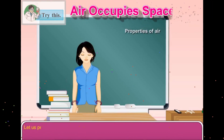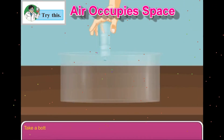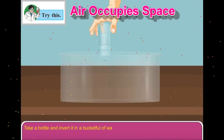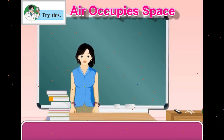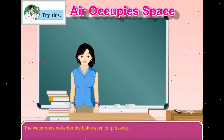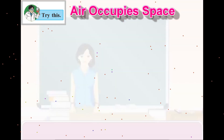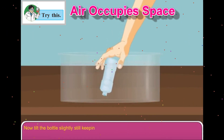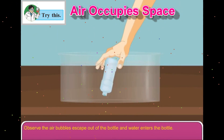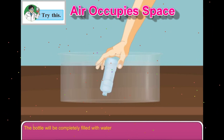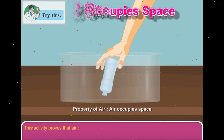Properties of Air: Let us perform some activities to learn about the properties of air. Activity 1: Take a bottle and invert it in a bucket full of water. Press the bottle gradually in the water and observe what happens. The water does not enter the bottle even on pressing, because the bottle is not empty — air is present inside. Now tilt the bottle slightly, still keeping it inverted. Air bubbles escape out of the bottle and water enters the bottle. The bottle will be completely filled with water when there is no air inside. This activity proves that air occupies space.